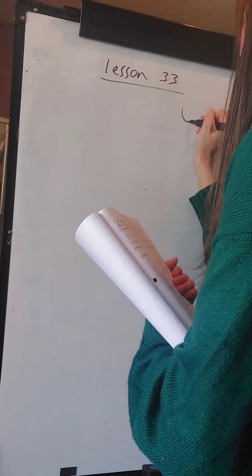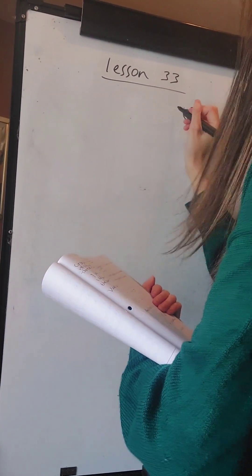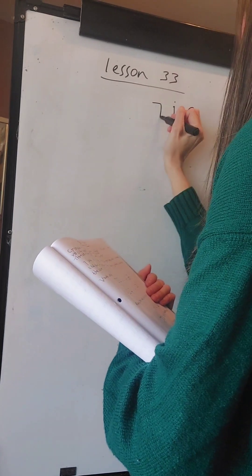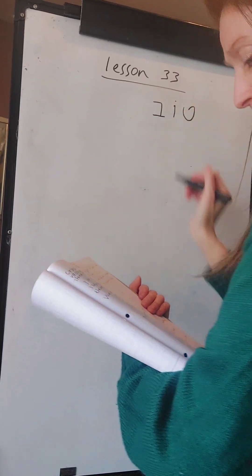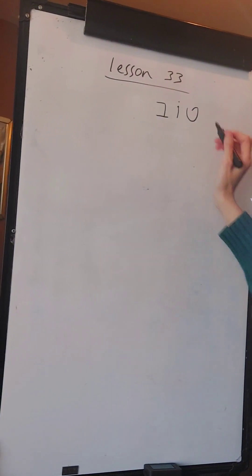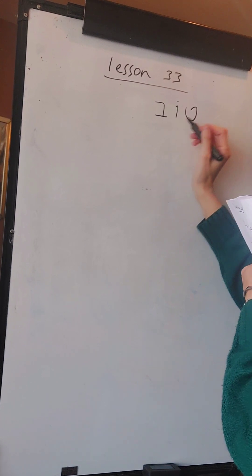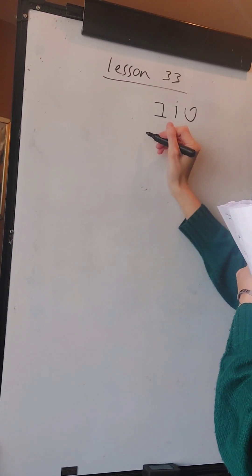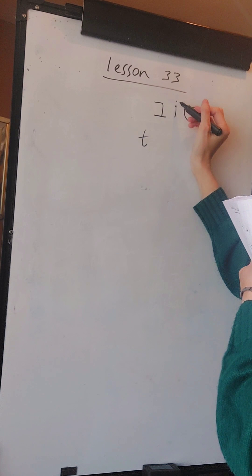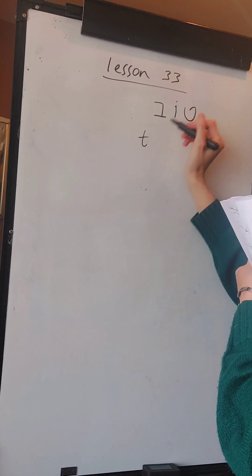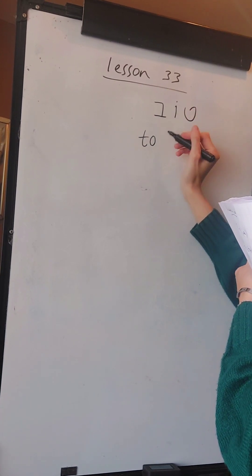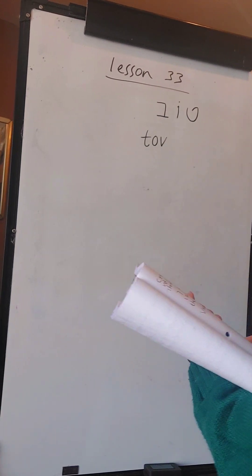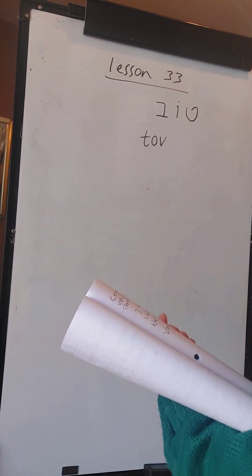All these will be in the notes as well. The first Hebrew word is the word for good - this is the Tet, which sounds as T. The Vav with the dot on top is the O vowel, and the Vet at the end, which is V - TOV, which means good.